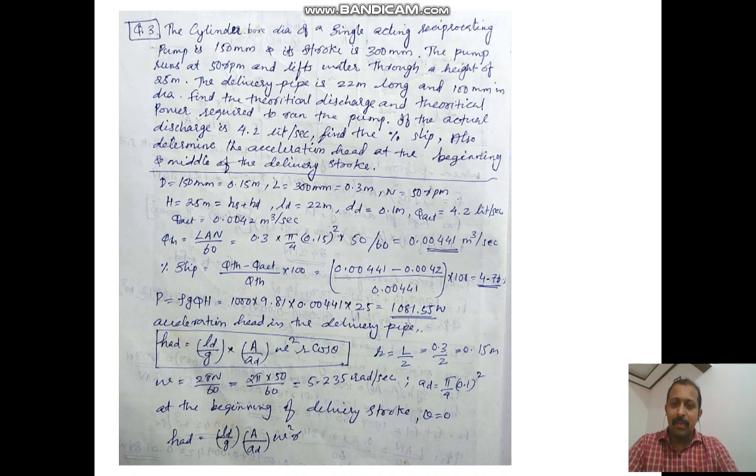If the actual discharge is 4.2 liters per second, find the percentage slip. Also determine the acceleration head at the beginning and the middle of the delivery stroke. So, given data - let us see the given data.